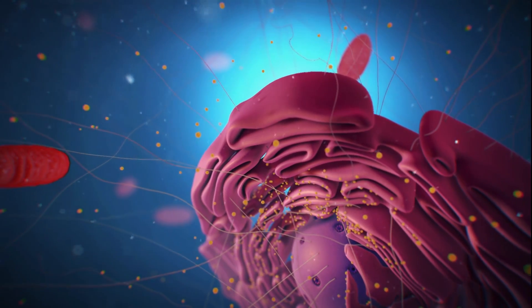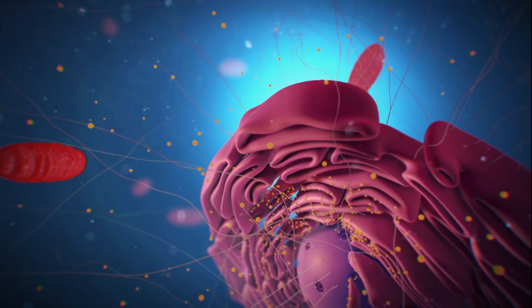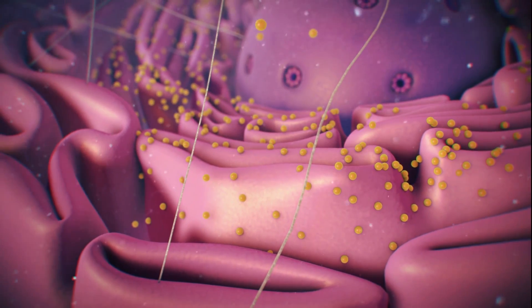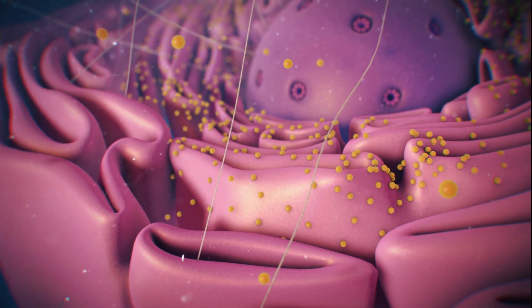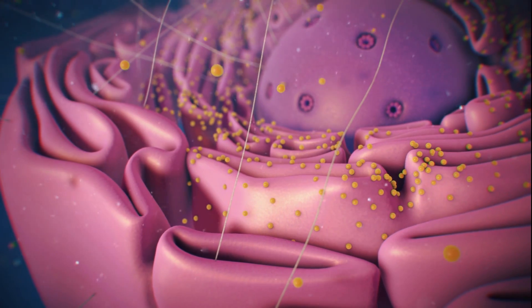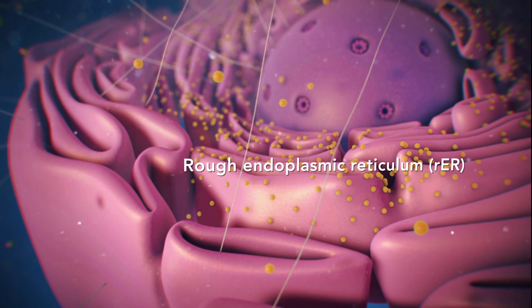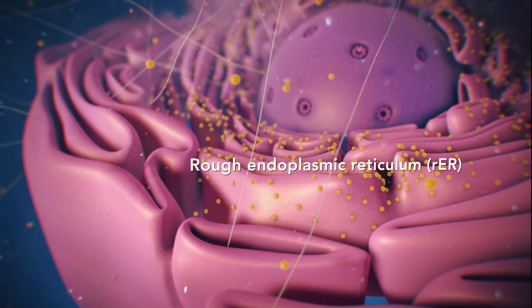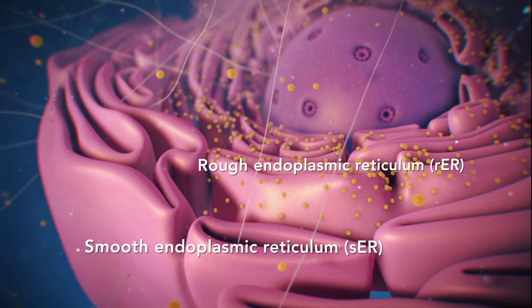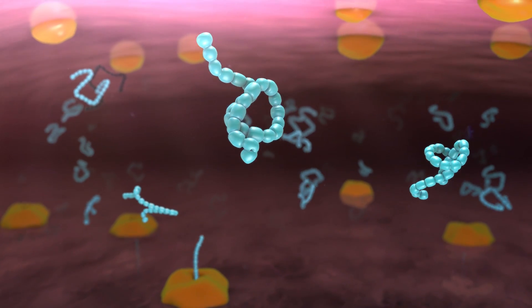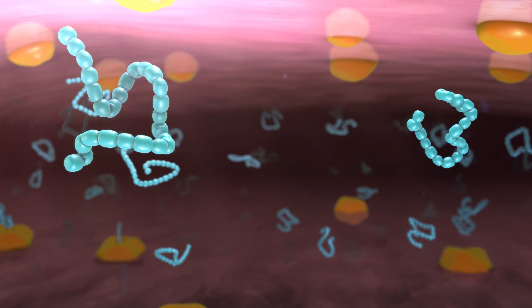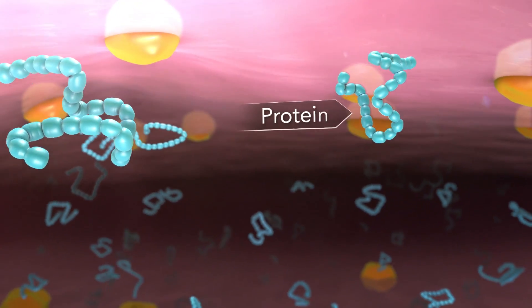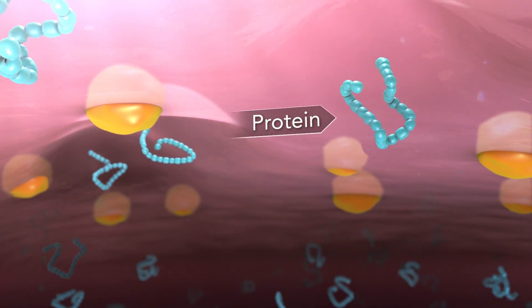Ribosomes may wander freely within the cytoplasm or attach to the endoplasmic reticulum, sometimes abbreviated as ER. There are two types of ER. Rough ER has ribosomes attached to it, and smooth ER doesn't have ribosomes attached to it. The endoplasmic reticulum is a membrane-enclosed passageway for transporting materials, such as the proteins synthesized by ribosomes.